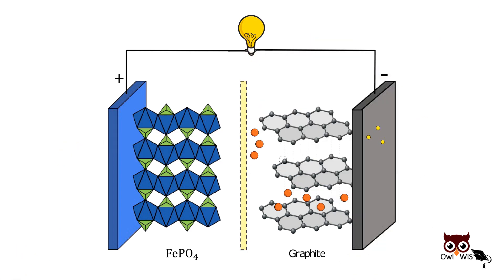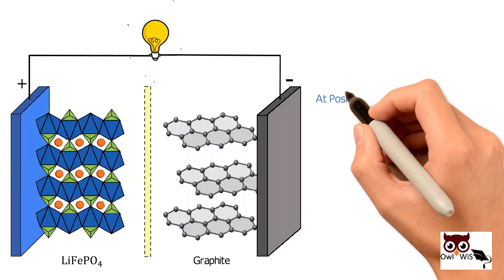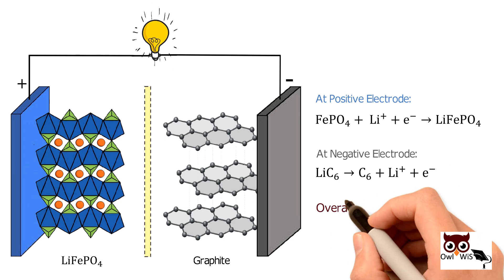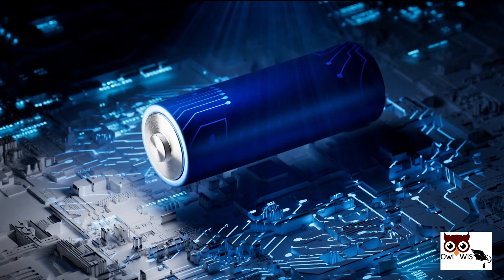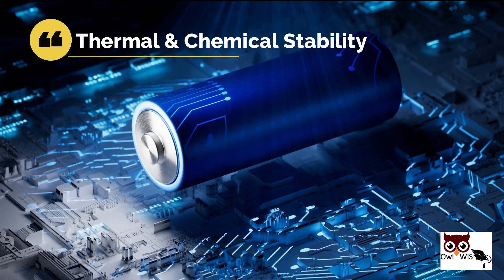During discharging the LFP battery, lithium ions are de-intercalated from the graphite crystal, enter the electrolyte, pass through the separator, then re-intercalate into the lattice of lithium iron phosphate. The reactions are reversed during discharging.